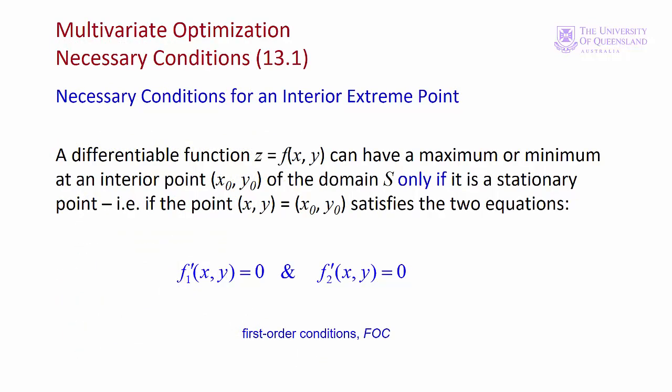The necessary conditions for interior extreme points are analogous to the univariate case. Internal extreme points, either maxima or minima, are stationary points. In the case of a function of two variables, both the first order derivatives are equal to zero at a stationary point. These are the necessary conditions, but not the sufficient conditions, because not all stationary points are extreme points, as we'll see in Module 3.